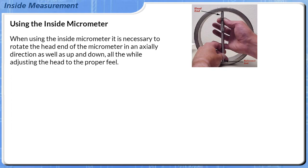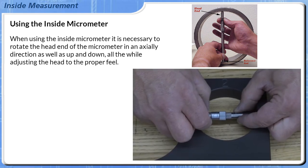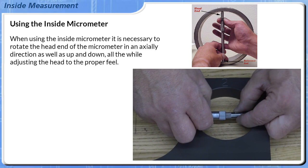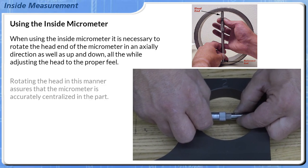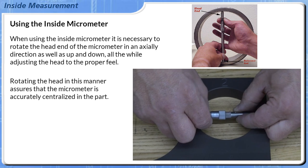When using the inside micrometer it is necessary to rotate the head end of the micrometer in an axial direction as well as up and down, all the while adjusting the head to the proper feel. Rotating the head in this manner assures that the micrometer is accurately centralized in the part.